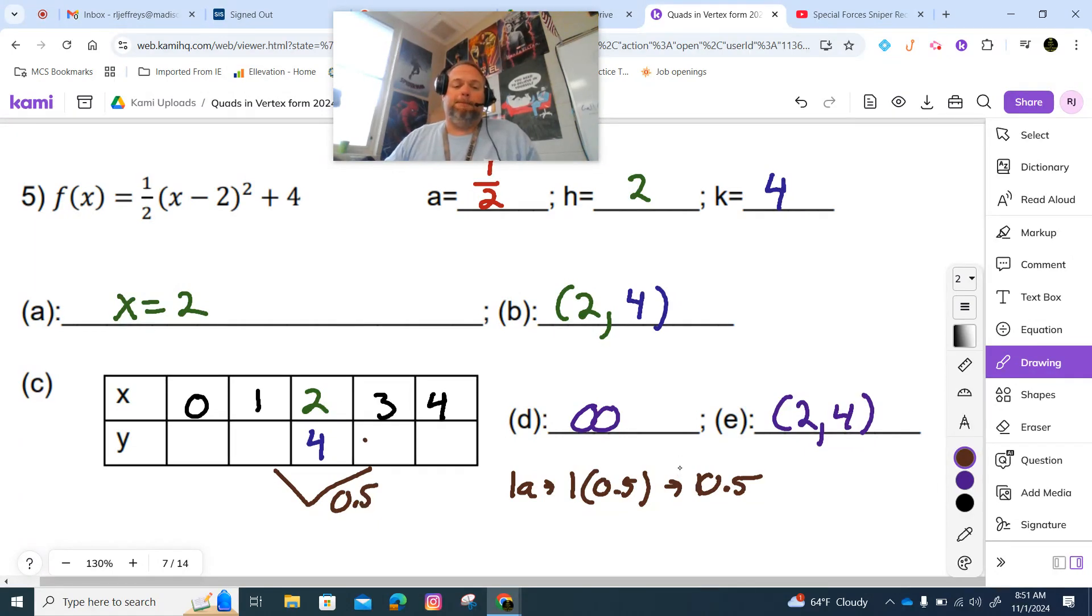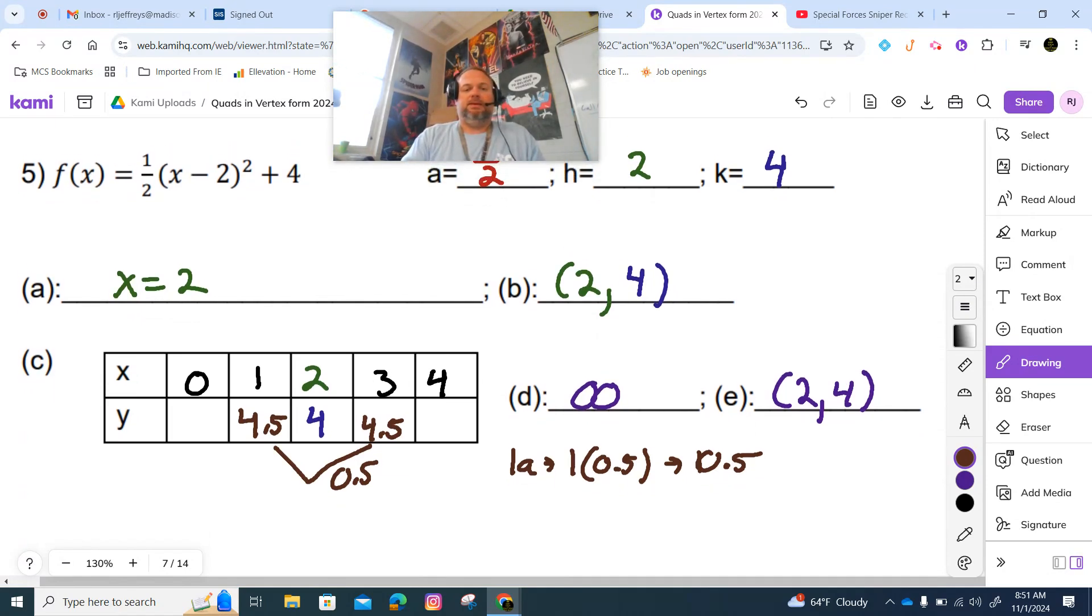0.5 plus 4 is 4.5. 3a - this is 3 times 0.5 which is 1.5. So we're adding 1.5 to that, so plus 4.5. This ends up being 6. So that one actually wasn't that bad even though it was a fraction. And five out of four people have problems with fractions. Do you get the joke?